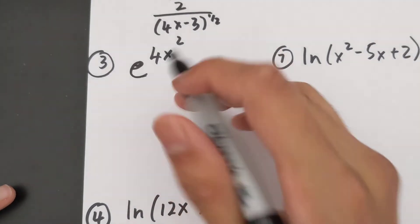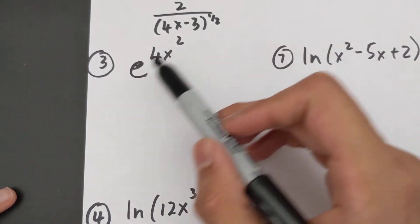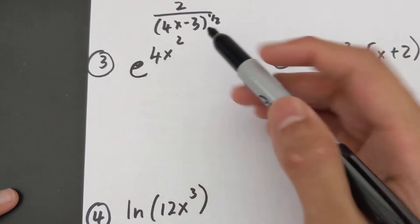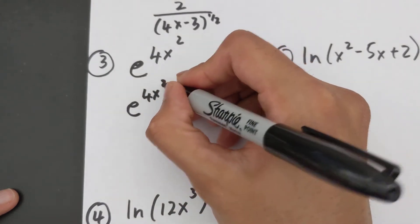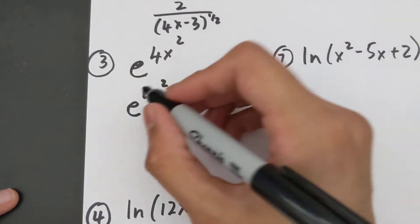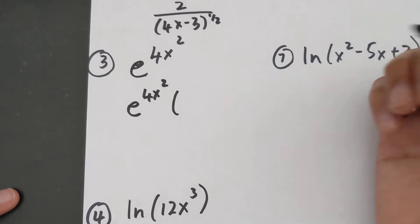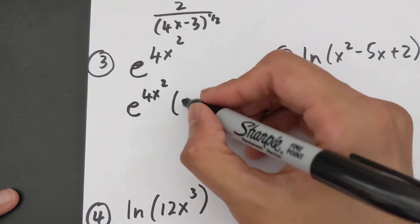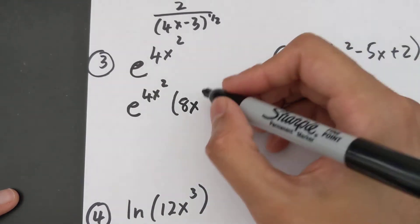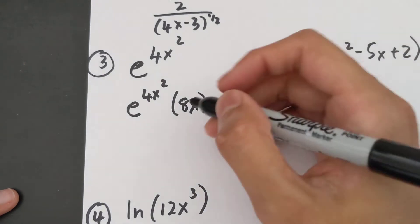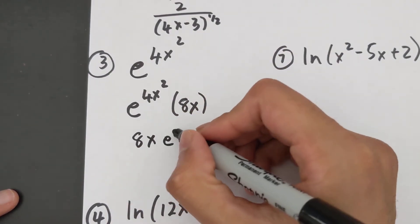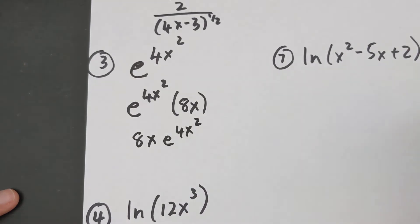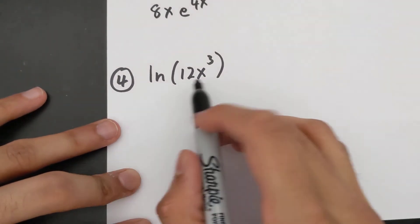For number three, an e function: when you differentiate an e function it stays exactly the same, but you multiply by the derivative of the exponent — that's the chain rule. The derivative of the exponent 4x² is just 8x, so the answer simplifies to 8x · e^(4x²).